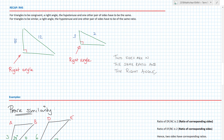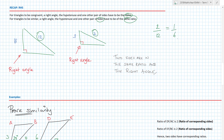The last rule is RHS. For congruent triangles, the right angle, the hypotenuse, and one other pair of sides have to be the same. For similarity, the only difference is the right angle, the hypotenuse, and one other pair of sides have to be of the same ratio. Right angles aren't going to get any bigger — they're always a right angle. Looking at this example: the ratio of 2 to 12 is 1 over 6, and 3 to 18 is also 1 over 6 — they are the same.